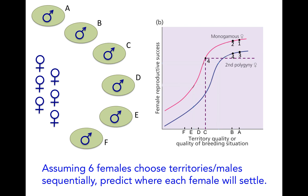Once there are two females with both of those higher quality territory males, those males are no longer available to mate. This model only accounts for a maximum of two females per male — you can make it more complicated by adding in other curves, but we're maxing out at two females here. So the fifth female should come down and be the first female to mate with C, since all that's left are males C through F and C has the highest quality territory. Then the sixth female should go and be the monogamous female with D — if she were to be the second polygynous female with C her fitness would be quite a bit lower.